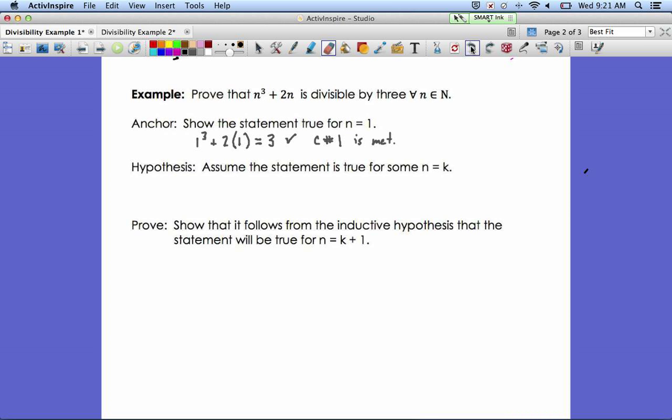Now we'll make our hypothesis, and that's our assumption that the statement is true for some n equals k. So we'll write down the statement with k plugged in for n. k cubed plus 2k. And we need to assume that that is divisible by 3. So the way we do that is we write that it's equal to 3 times some number a, and that number a has to be a member of the integers, a member of the set of integers.